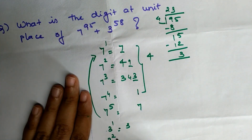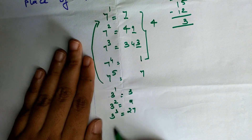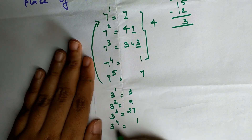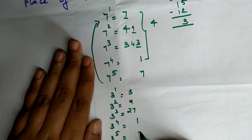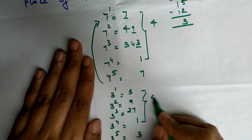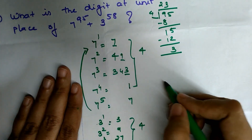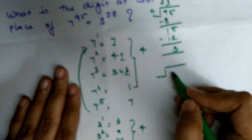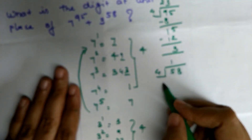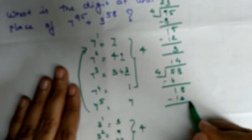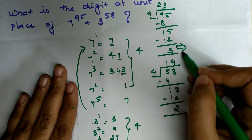For 3^4, the units place: 7 × 3 = 21, units digit is 1. For 3^5, 1 × 3 = 3 — so powers of three also have a cycle of four. We divide the exponent 58 by four: 58 ÷ 4 leaves a remainder of 2. So the units place of 3^58 is the same as the units place of 3^2, which is 9.